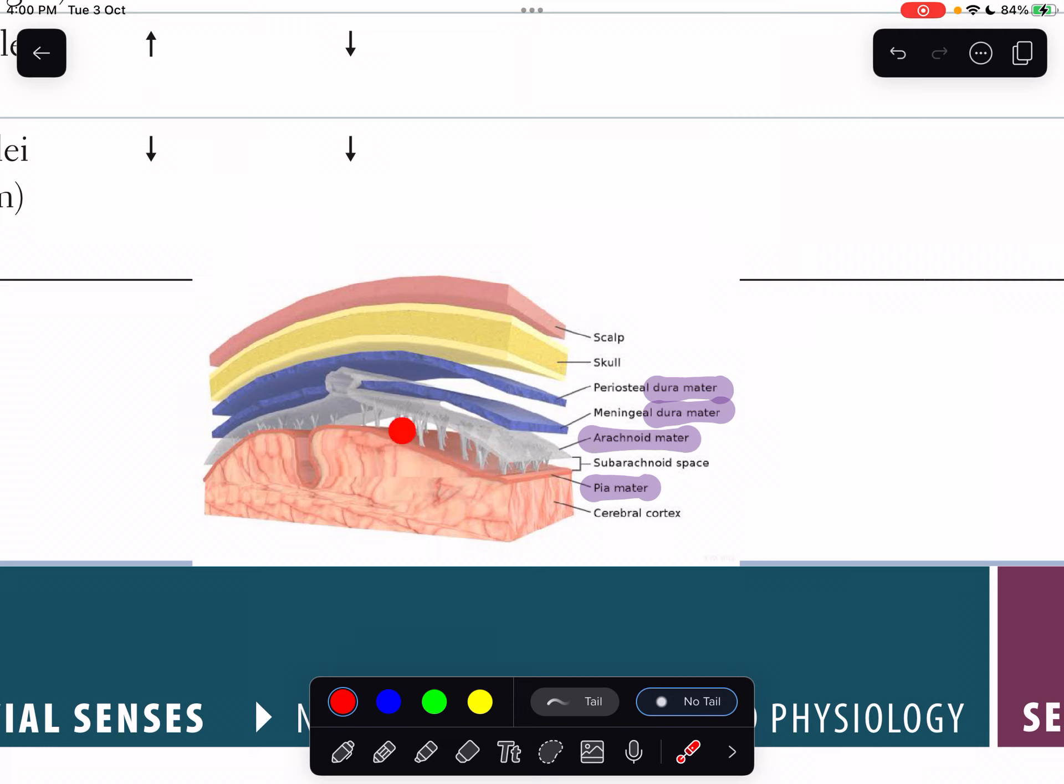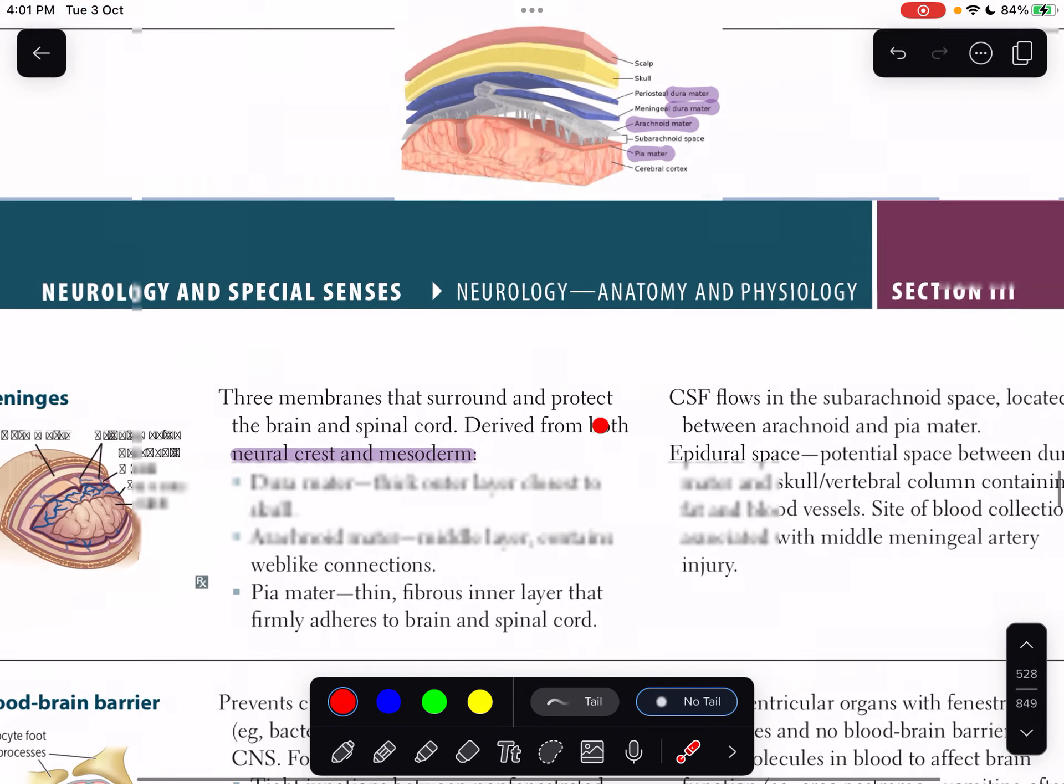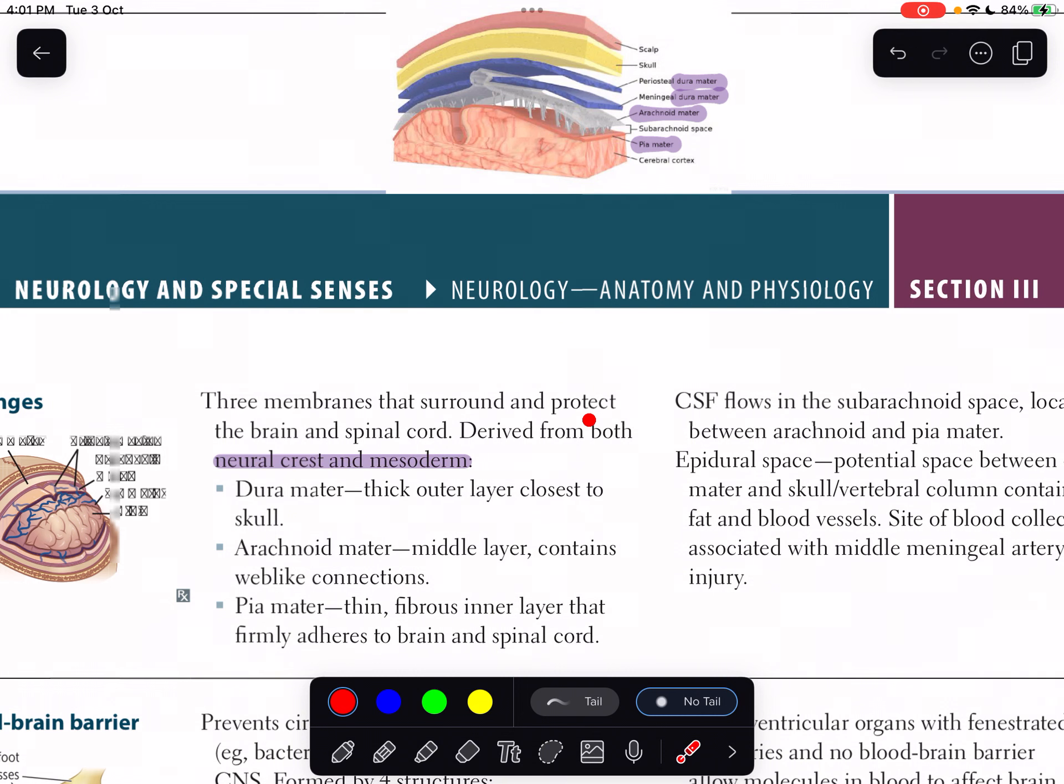We have three layers: dura matter, arachnoid matter, and pia matter. The dura matter is a thick outer layer closest to the skull. The middle layer is the arachnoid, which contains web-like connections - these were the web-like connections.